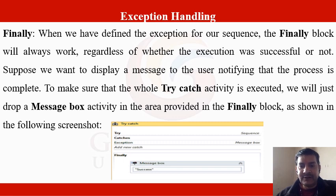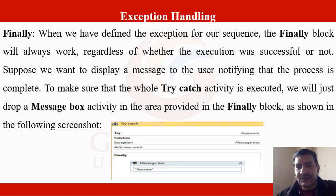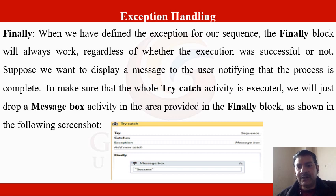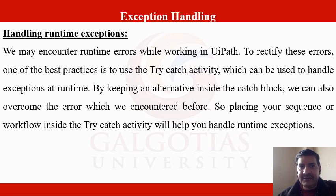The finally block is the fourth part. When we have defined the exceptions for our sequence, the finally block will always execute regardless of whether execution was successful or not. Suppose we want to display a message notifying the user that the process is complete — we drop a Message Box activity in the finally block area. Whether an exception occurs or not, the finally block must always execute, as you may know from C, C++, or Java.